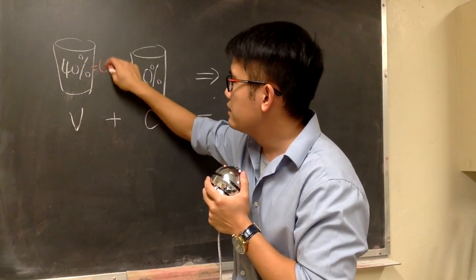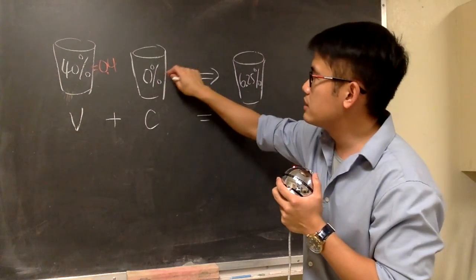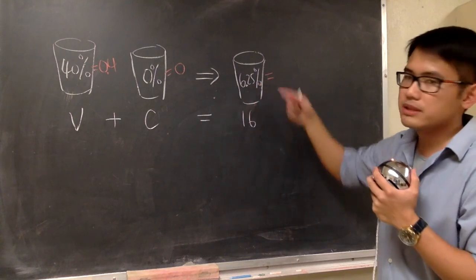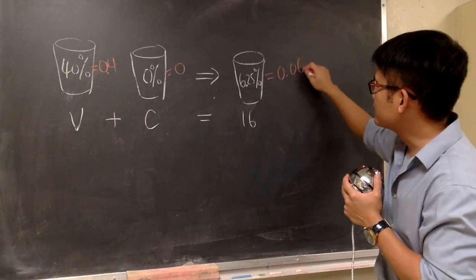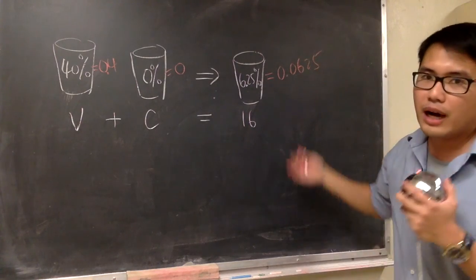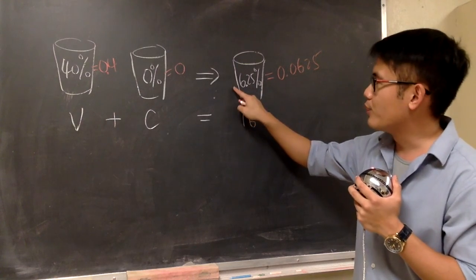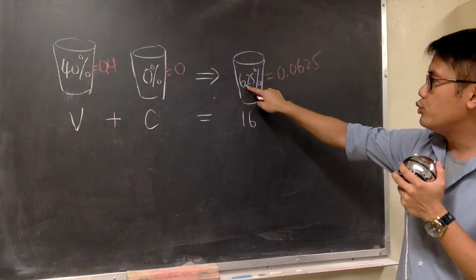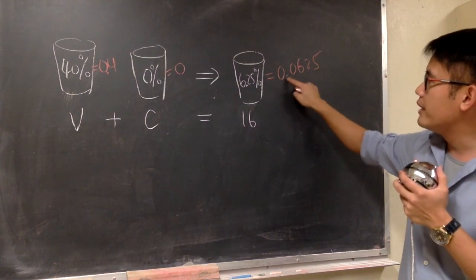So, 40%, this is the same as 0.4. 0% is just 0. And how about this? 6.25%. Well, this is 0.0625. And how do we do that? Move the decimal point twice to the left. 1, 2. You see, originally we have the decimal point in between the 6 and the 2. And then we moved it twice. 1, 2. And now it's right here.